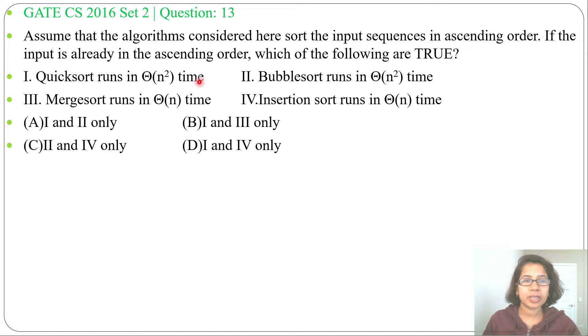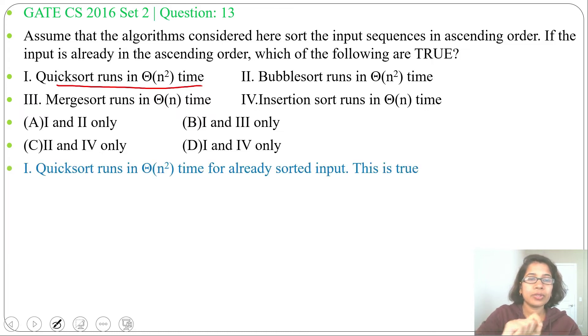Let's analyze one by one statement. First statement: Quicksort runs in Theta of n² time. This is true. If an array is already sorted, that is the worst case for Quicksort, and in worst case Quicksort runs Theta of n².